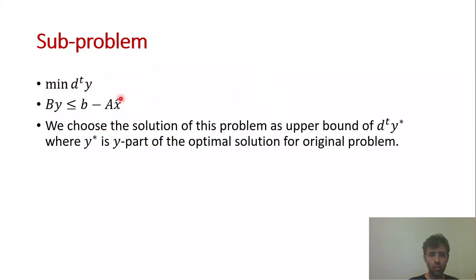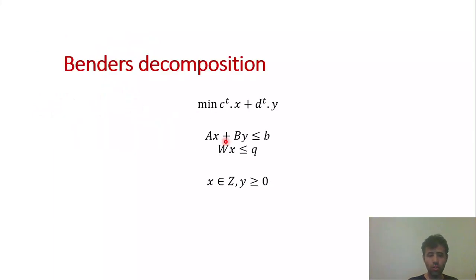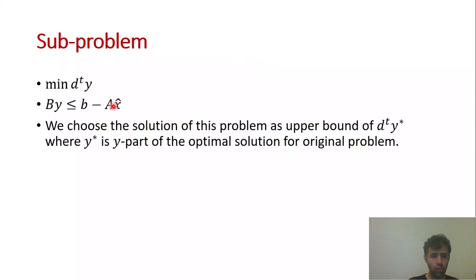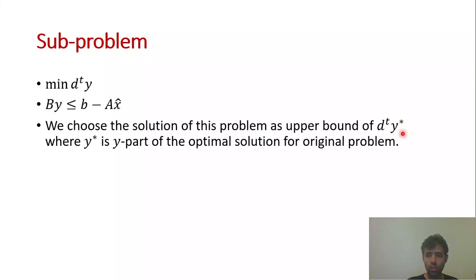To form the constraints of the sub problem, we drop the constraints that have only integer variables. We take the x part to the right-hand side and initialize it with x-hat. Benders Decomposition states that the solution of this sub problem is an upper bound for d-transpose times y-star, where y-star is the y-solution of the original problem.